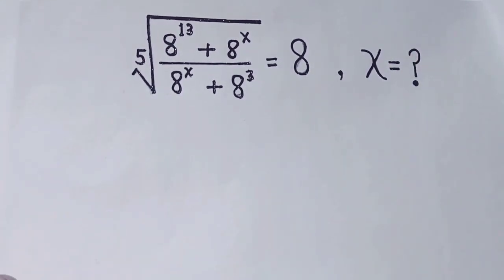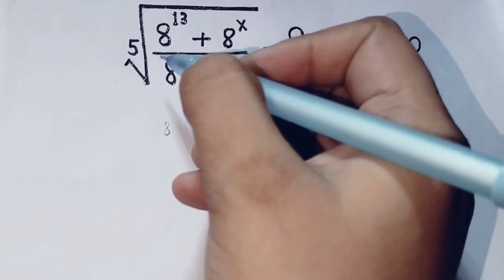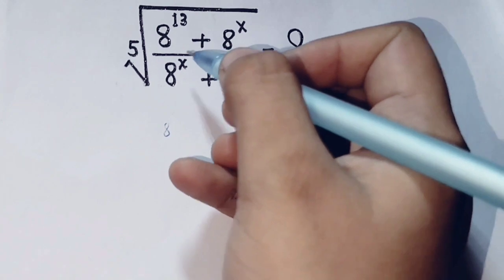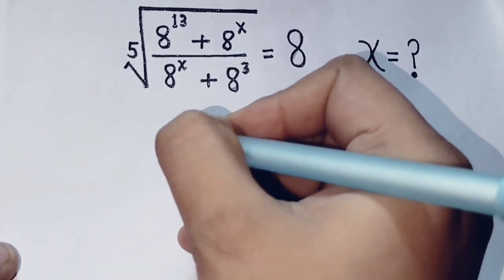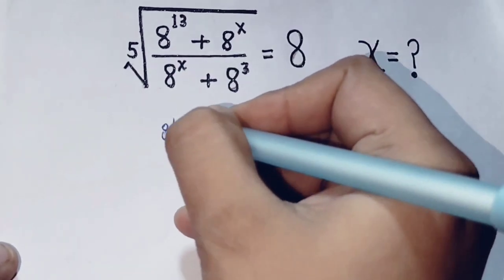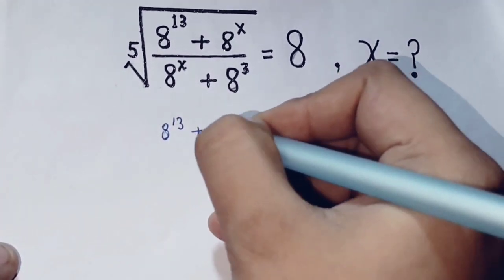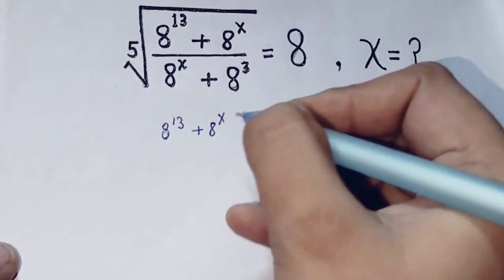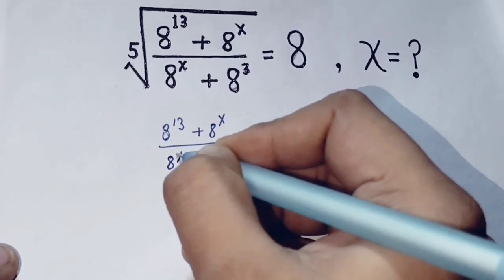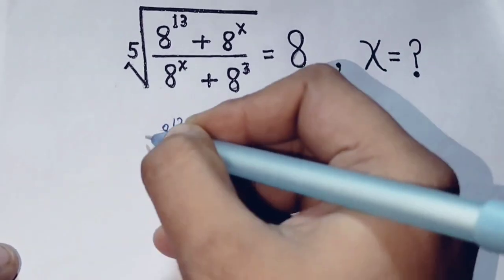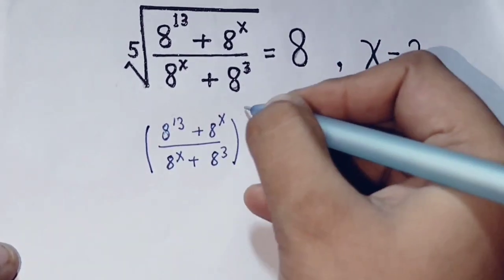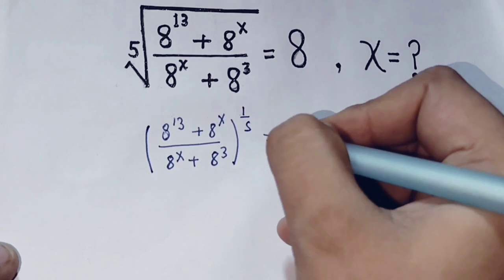To solve this problem, keep in mind that the fifth root becomes a power of one-fifth. So we write: (8 power 13 plus 8 power x) over (8 power x plus 8 power 3), raised to the power 1 over 5, equals 8.